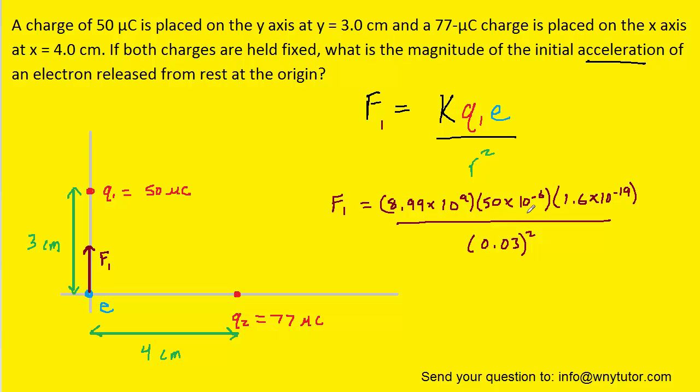We've plugged in k, the 50 microcoulombs converted to coulombs. The charge on an electron is 1.6 times 10 to the minus 19 coulombs. Then we divide by the distance squared, with that distance in meters.